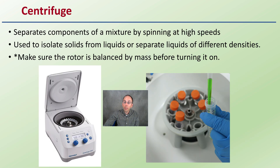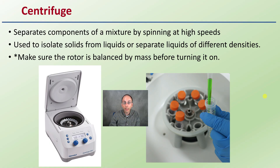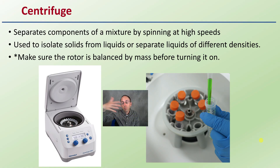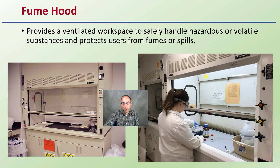The centrifuge spins really quickly at high speeds and is used for separating out liquids of different densities. You can decant the top liquid. When utilizing these, make sure the rotor is balanced based on mass — if it's unbalanced, it will vibrate off the table and cause all sorts of issues, not to mention loss of the experiment and spilling of chemicals.